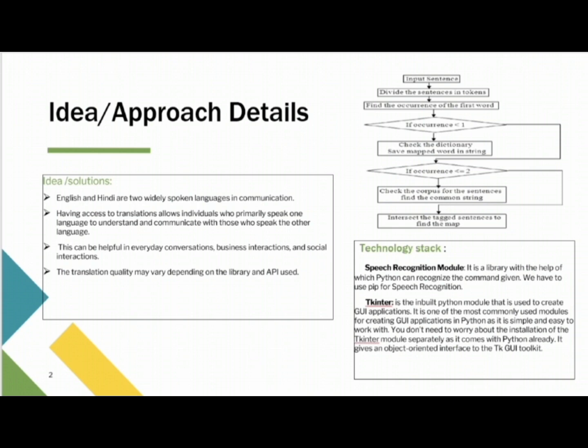We can also use this translator to communicate in multiple languages. The translation quality may vary depending on the library and the API used. The flowchart in this slide explains about the back-end of this translator. The technology used in this translator are Google Translate and Tkinter. This translator can be used in both text forms — it takes input in text form and gives the output in the required language to the users.